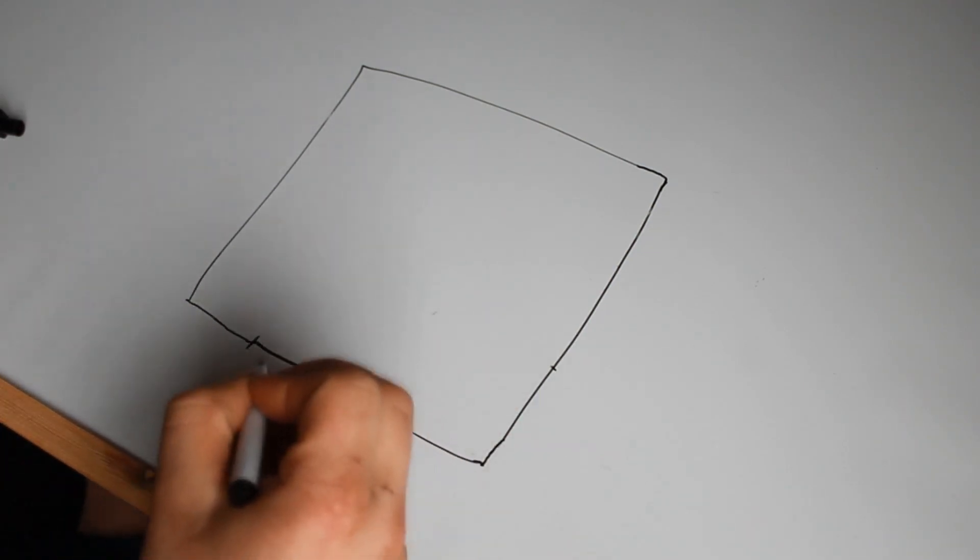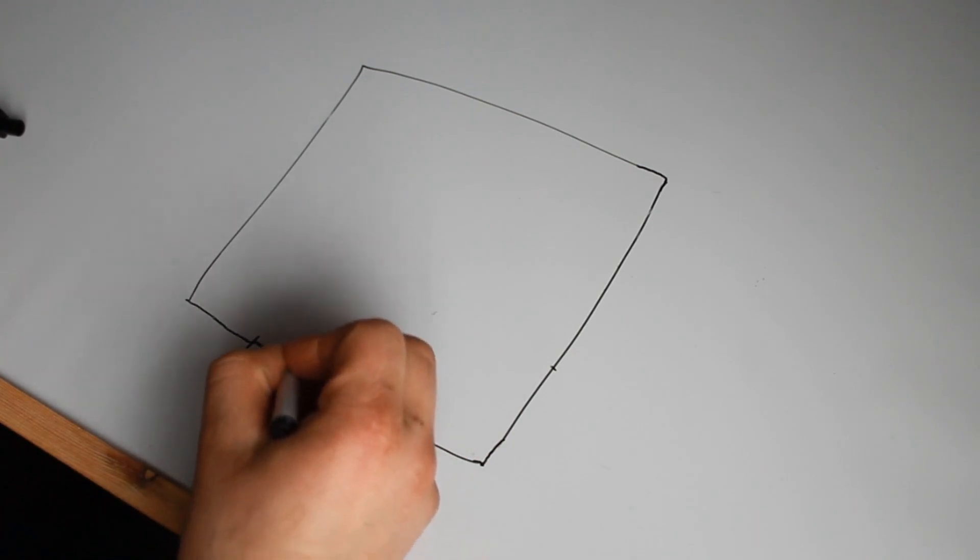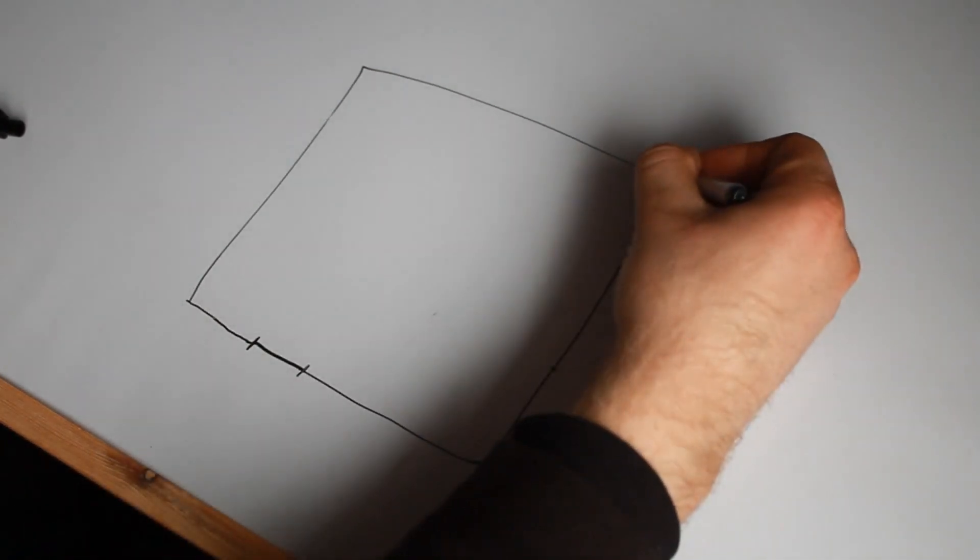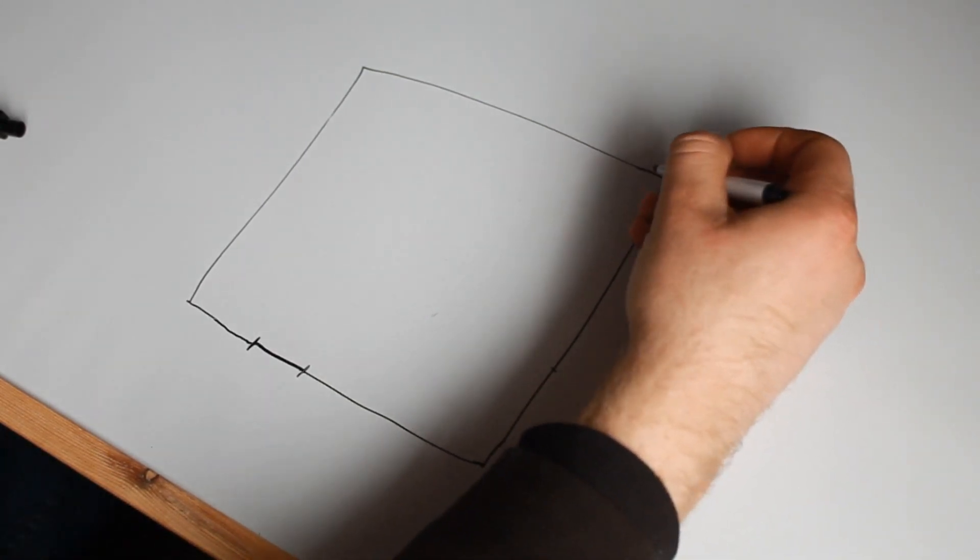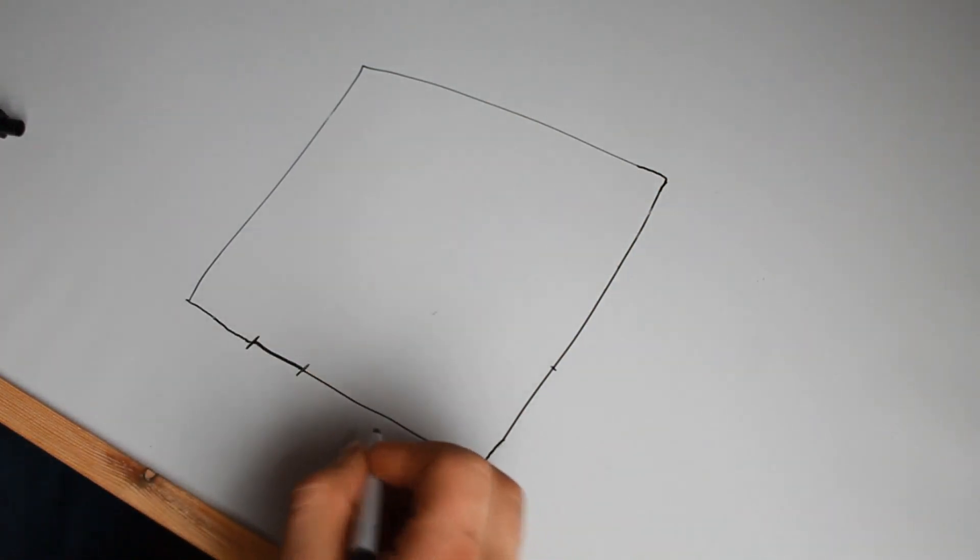Once you know where your gap is, the next thing you're looking for is the longest distance. So the longest distance is over here in this corner. Then the next thing we want to look at is where we're going next.